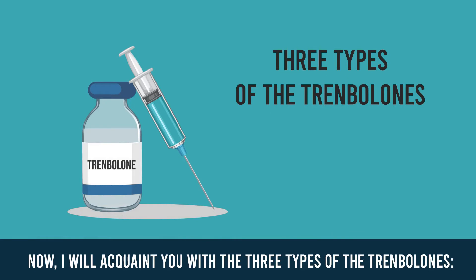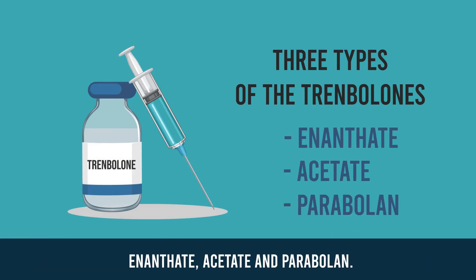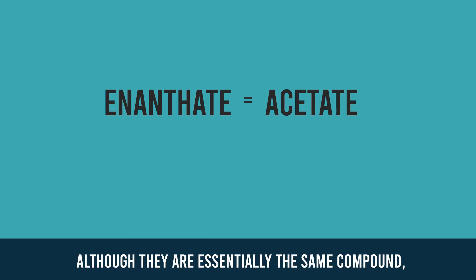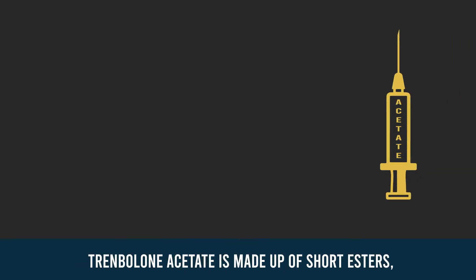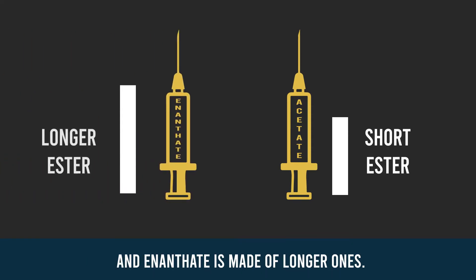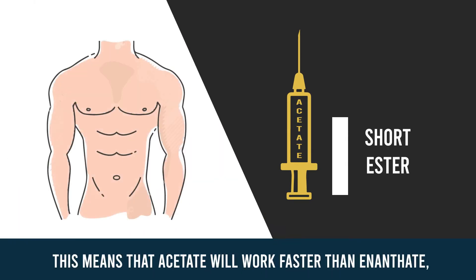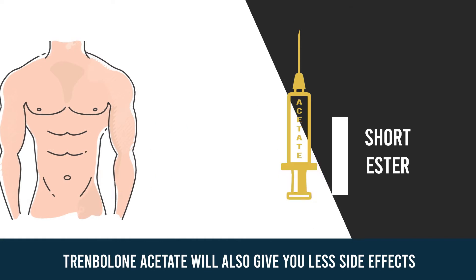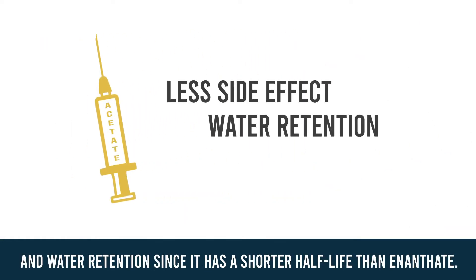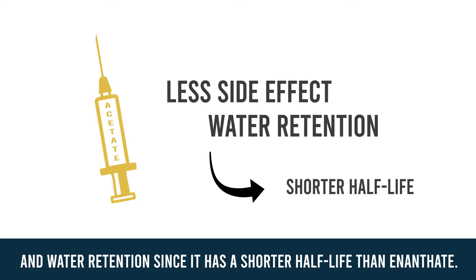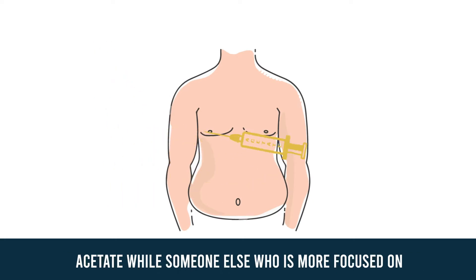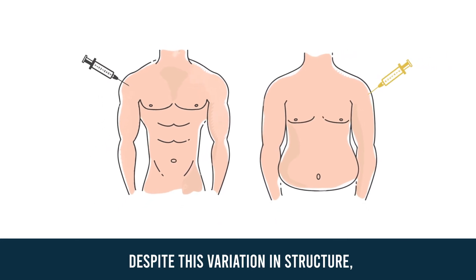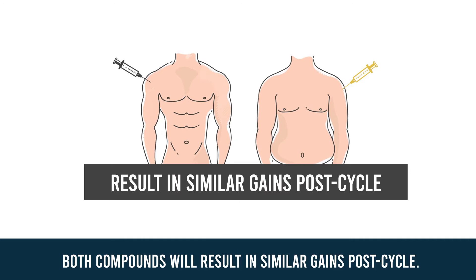There are three types of trenbolone: enanthate, acetate, and parabolin. The two most popular forms are enanthate and acetate. Although they are essentially the same compound, they have different esters. Trenbolone acetate is made up of short esters and enanthate is made of longer ones. This means that acetate will work faster than enanthate and subsequently the substance will be in and out of your system faster. Trenbolone acetate will also give you less side effects and water retention since it has a shorter half-life than enanthate. Most people who are more focused on weight loss will use acetate, while someone more focused on muscle gain will use enanthate. Despite this variation in structure, both compounds will result in similar gains post cycle.